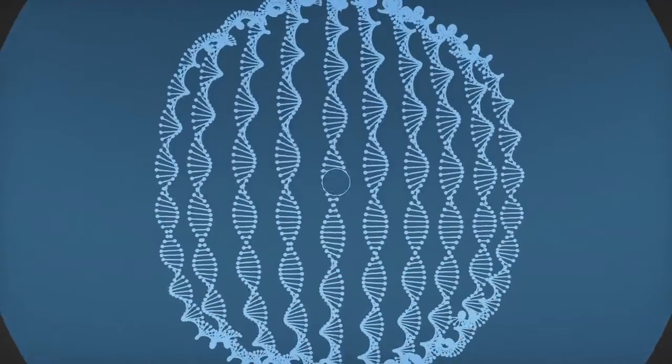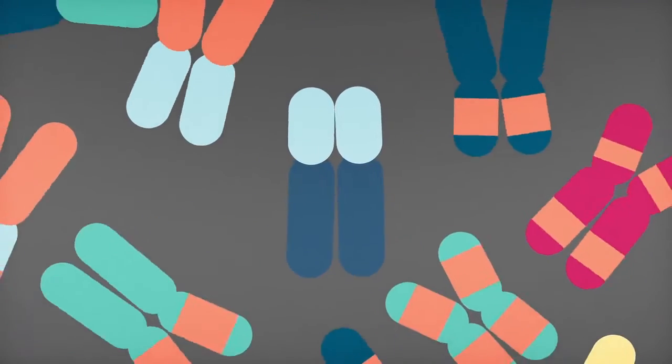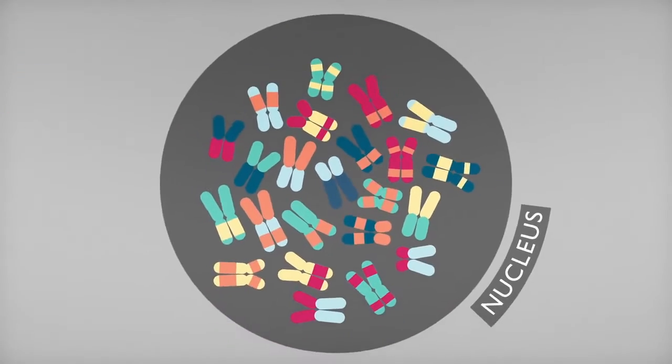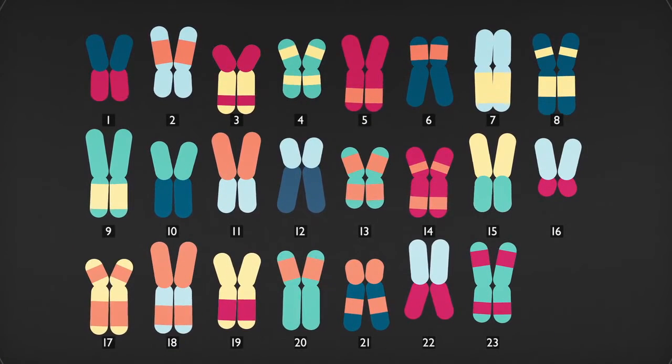DNA folds into paired packages called chromosomes that are stored in the nucleus of the cell. Different species have different numbers of chromosomes. Humans have 23 pairs.